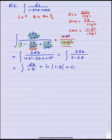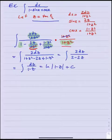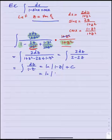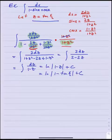Don't forget to put z back in terms of x. Since z is tan(x/2), our answer is ln|1 minus tan(x/2)| plus C.